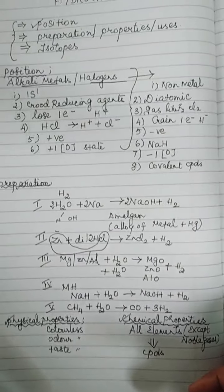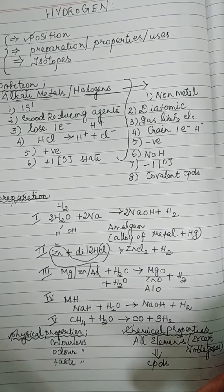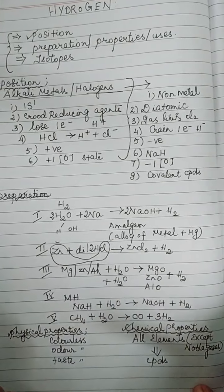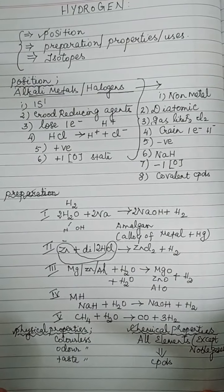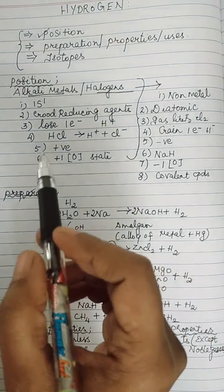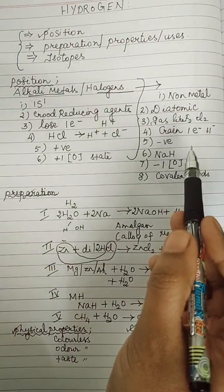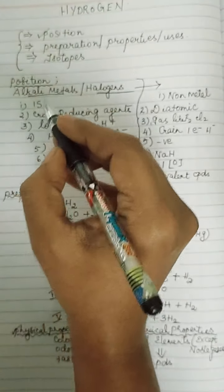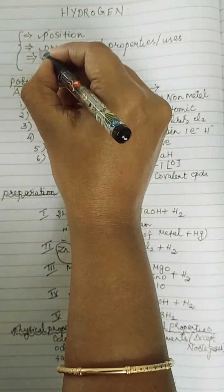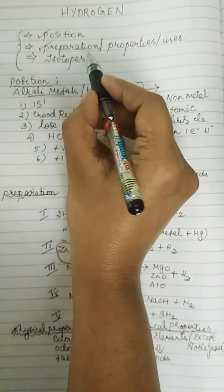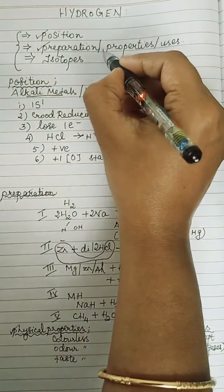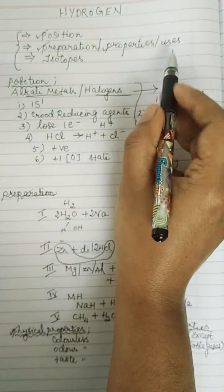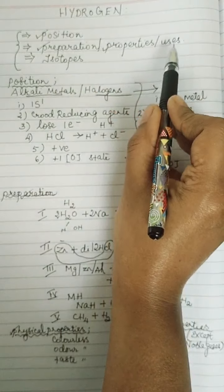So what have we seen? We have seen the position of hydrogen — I justified that hydrogen is similar to alkali metals and also similar to halogens. Then I covered the preparation of hydrogen, and the physical and chemical properties of hydrogen.